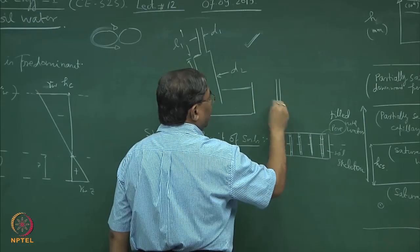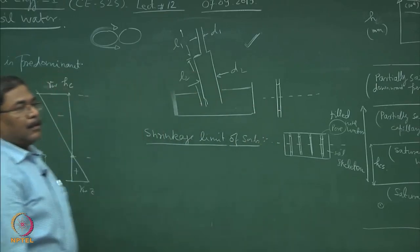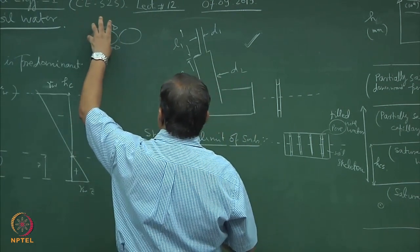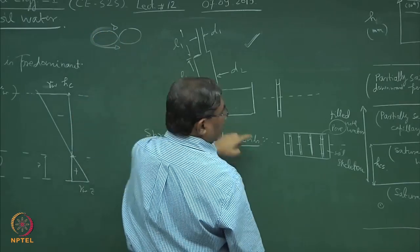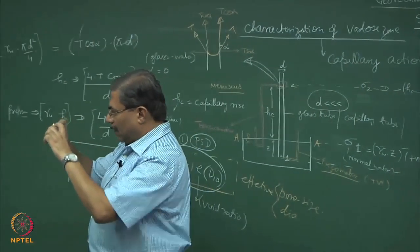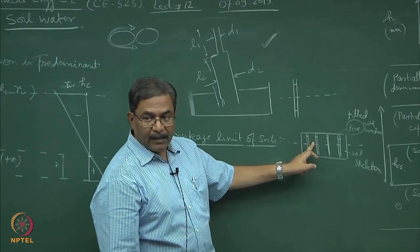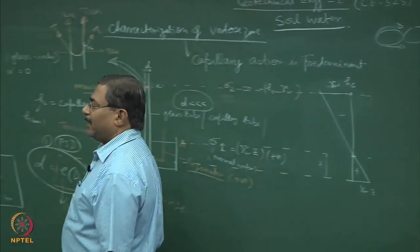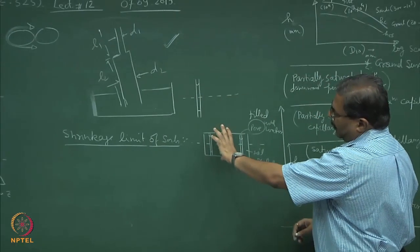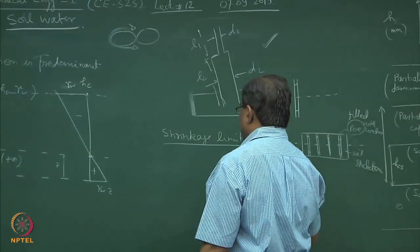The enlarged view would be: this is the center line of the sample, and this is the meniscus formation from both sides. Because of water and surface tension, the grains are under compression. When evaporation takes place from the soil, the soil sample gets compressed up to the shrinkage limit. By definition, shrinkage limit is the state where air has not entered the system and it remains saturated. So capillarity and its application is in determining the shrinkage limit of soils.